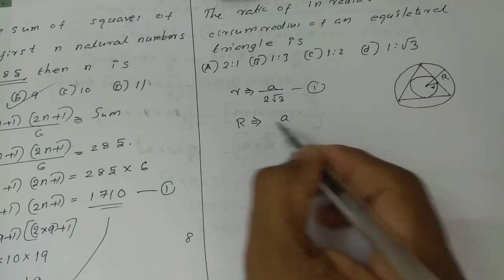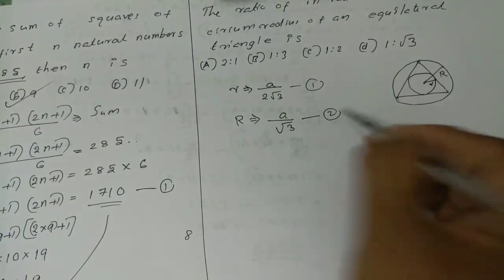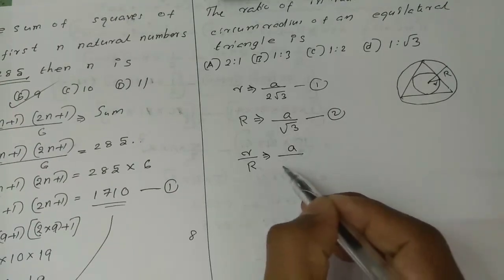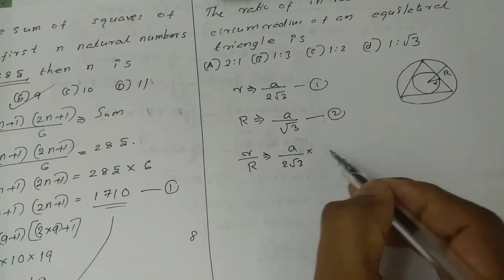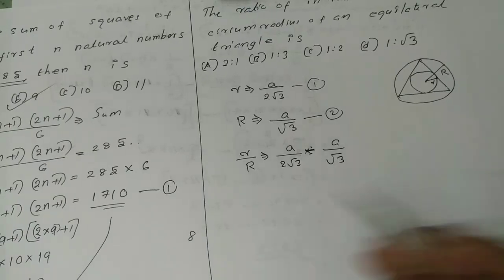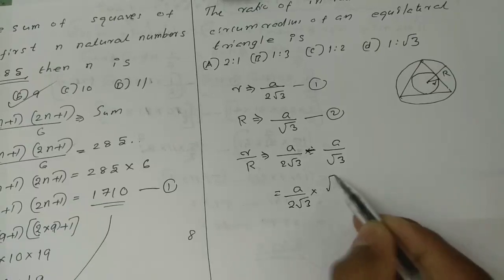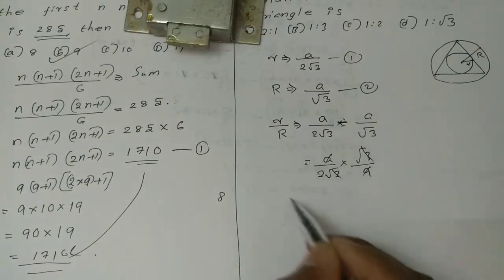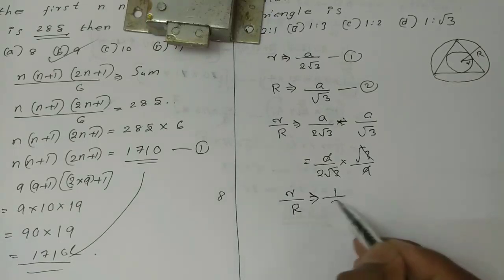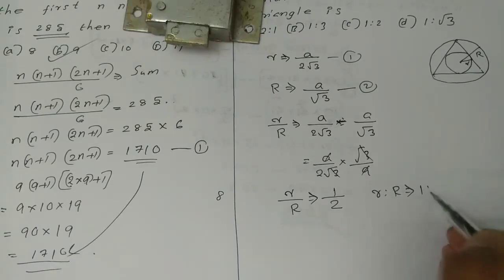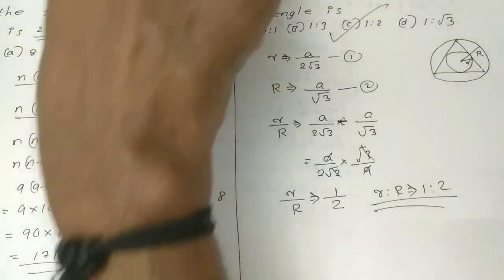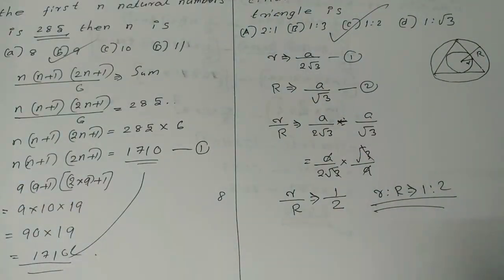The circumradius R equals A divided by √3. Therefore, r divided by R equals (A/2√3) divided by (A/√3), which simplifies to 1/2. So the ratio of inradius to circumradius of an equilateral triangle is 1:2.